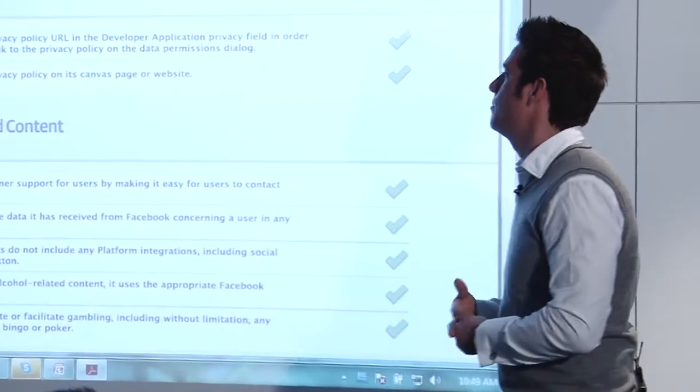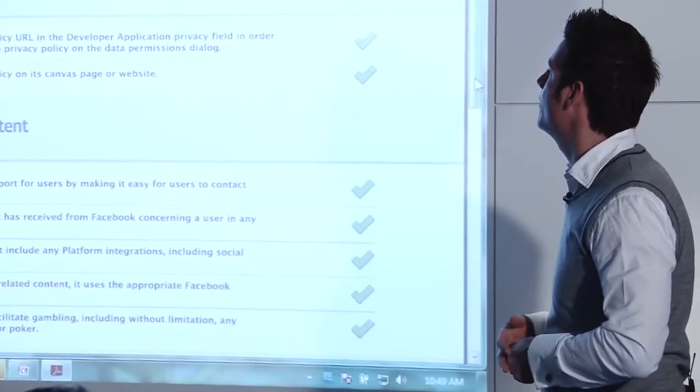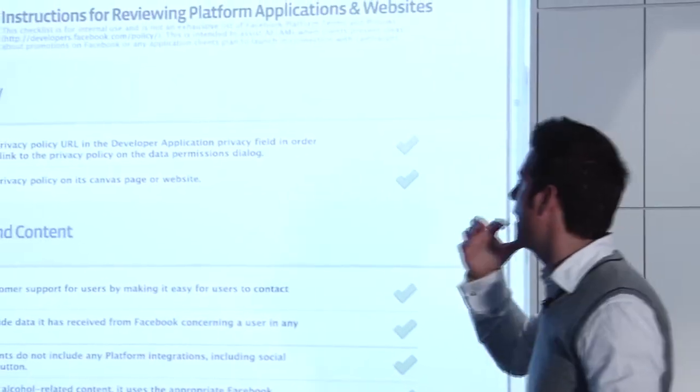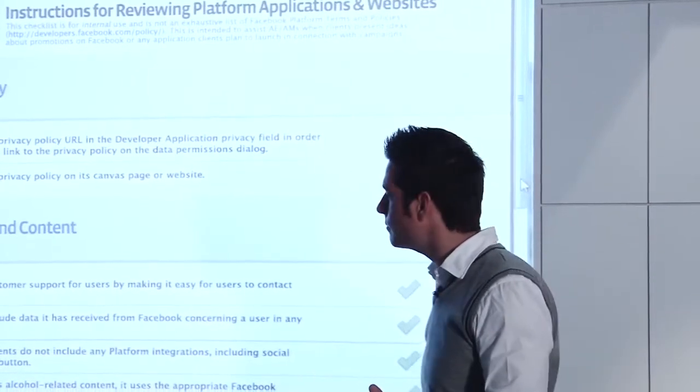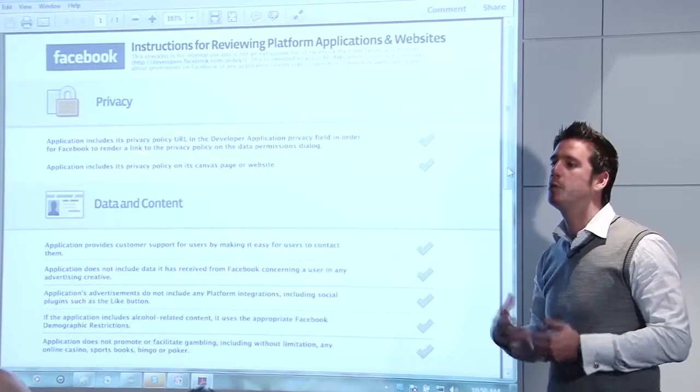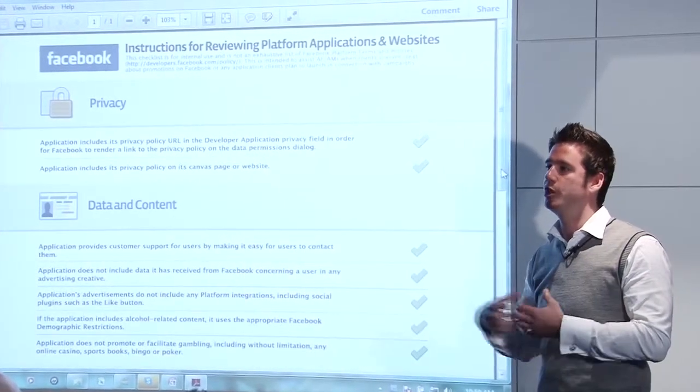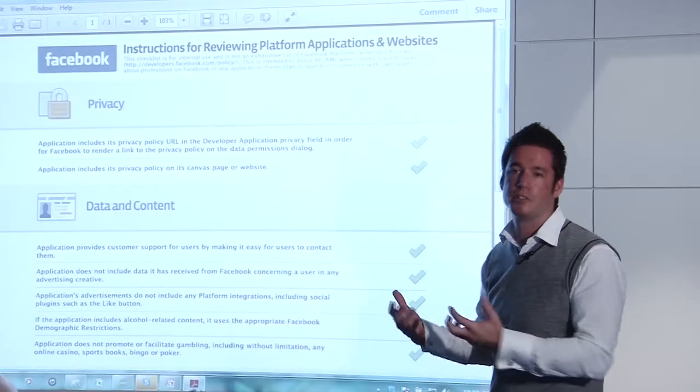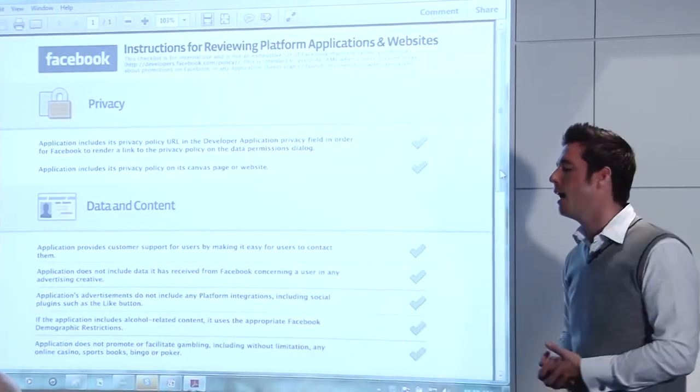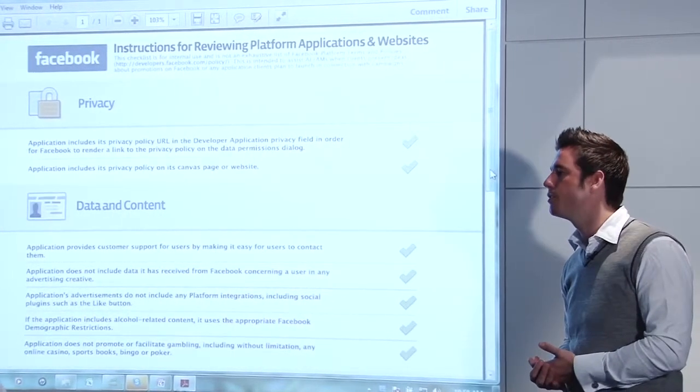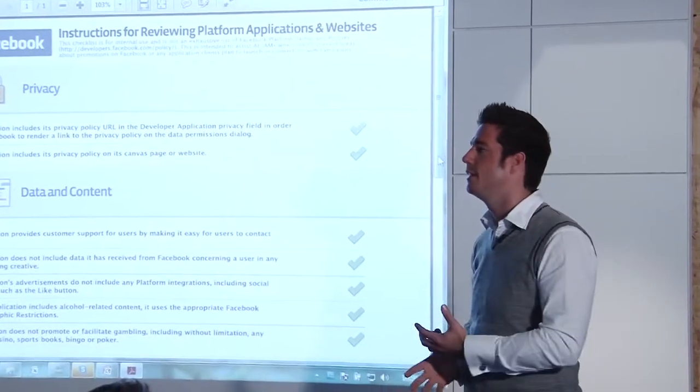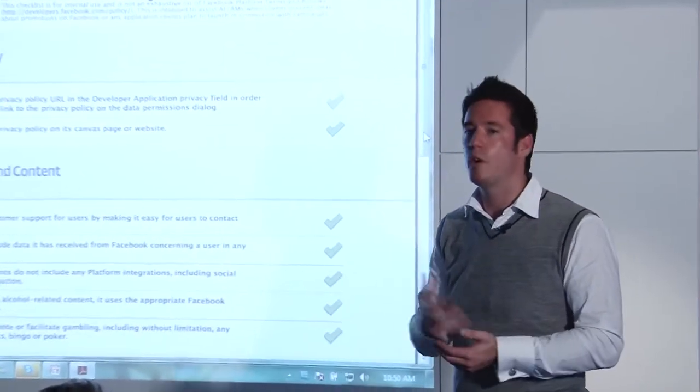We start off with just the privacy. Applications include its privacy policy or the database application as well as a privacy policy on its canvas page or website. We'll probably get into this a bit later, but if any of you are involved in creating applications, having pre-filled boxes for people to share amongst friends is also illegal. It needs to be blank for users to be able to comment or put their own comments into it before it gets shared. In the past, Facebook had the opportunity to share an application or competition to as many friends as they want. Now it's been limited to only one or two, I believe.